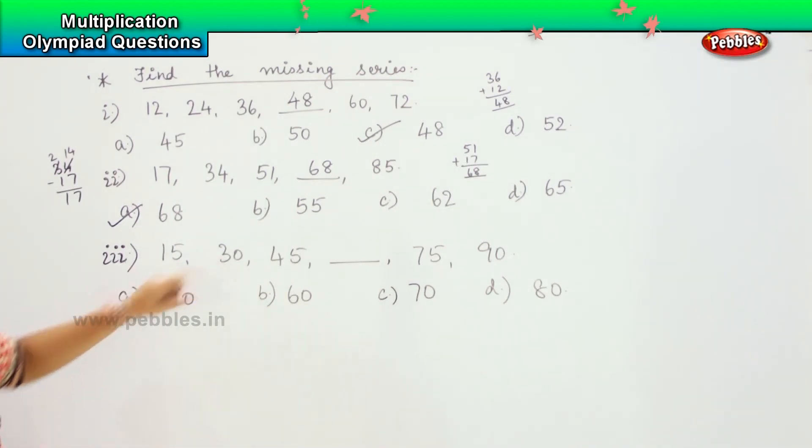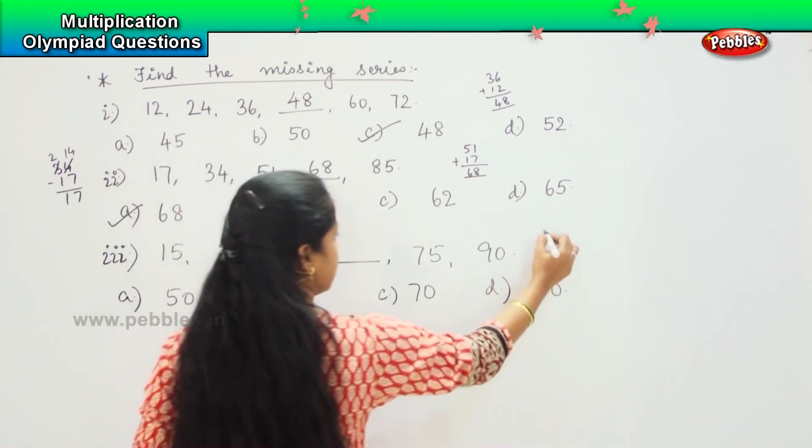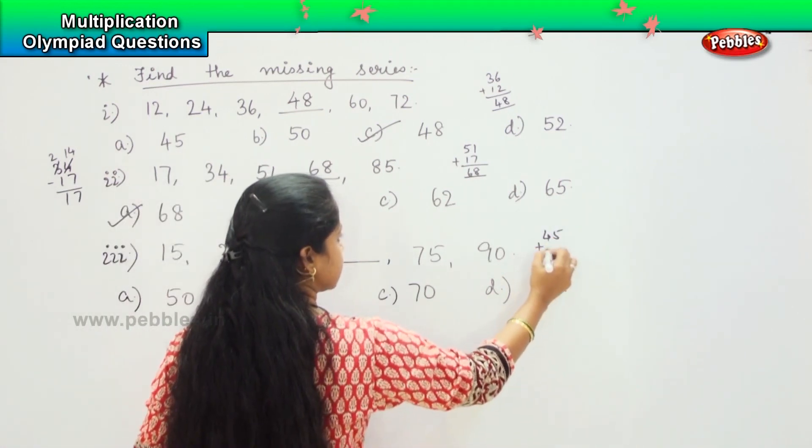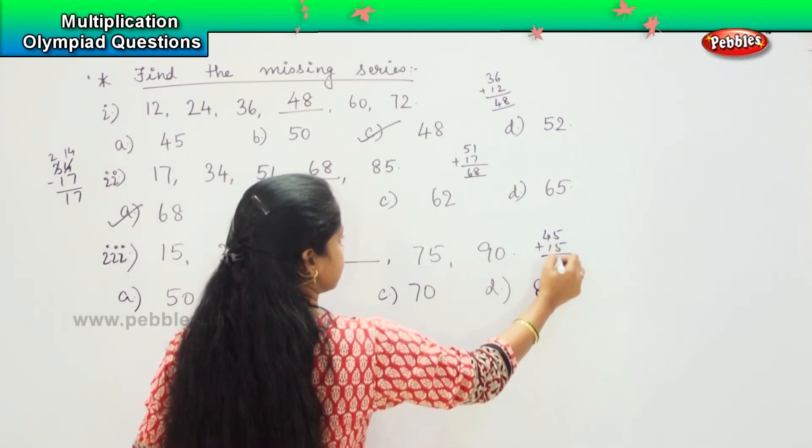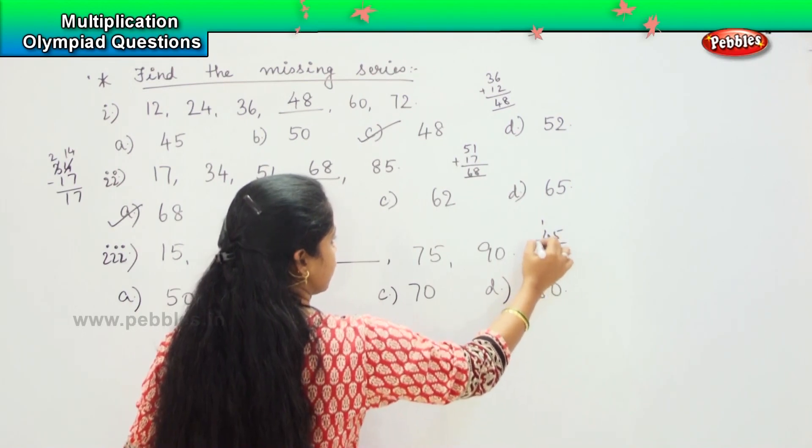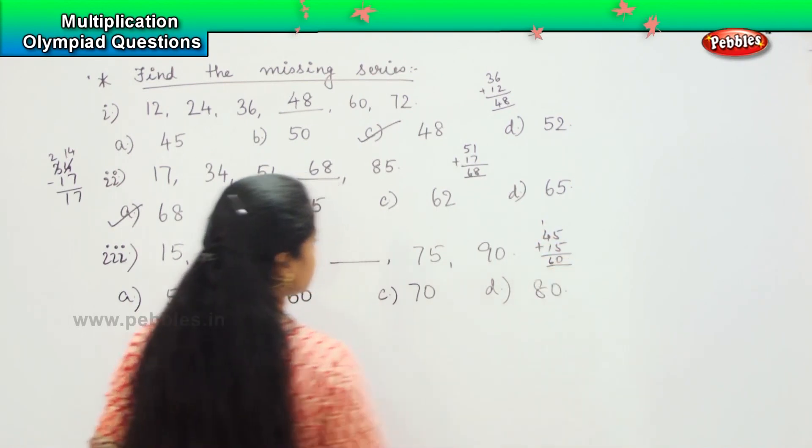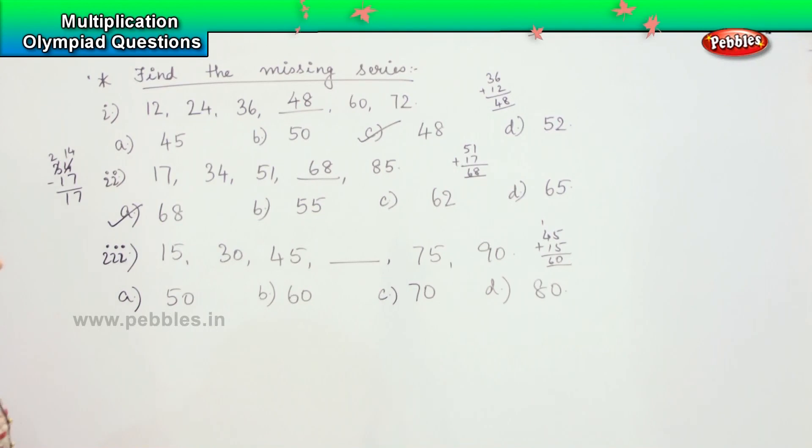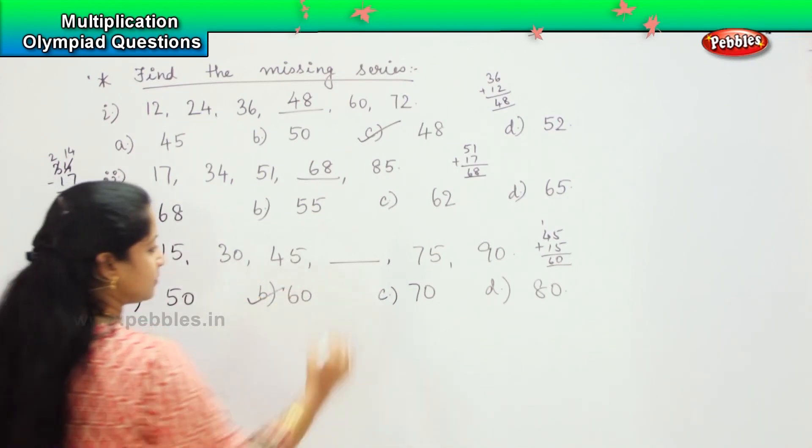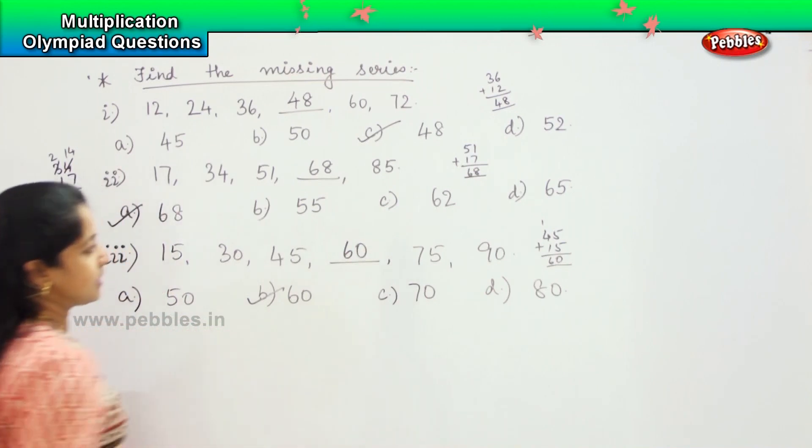Next one, 15 to 30, what is the difference? Good, it is 15. 30 to 45? 15. So the next one, 45 plus 15. 5 plus 5 is 10, 1 plus 4 is 5 plus 6. So the answer is 60. Where is 60? Here. So here it will be 60.